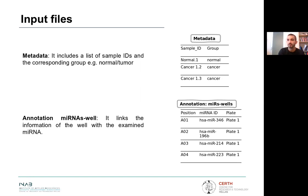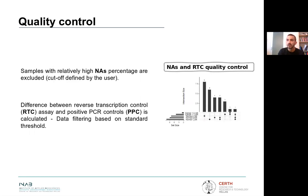The annotation microRNA well table links the measurement of each well with the examined microRNAs. The quality control phase is essentially a data filtering process. Samples are filtered based on the NH percentage and quality assessment criteria. More specifically, samples whose NH percentage exceeds a user-defined threshold are excluded, while the difference between the reverse transcription control assay and the positive PCR controls is calculated and data are filtered based on a standard threshold. Relevant plots are also generated presenting all the necessary information.